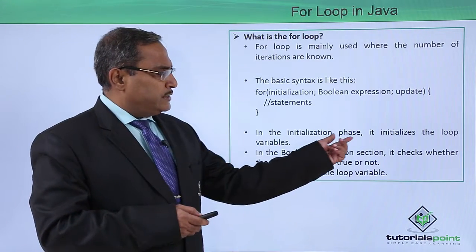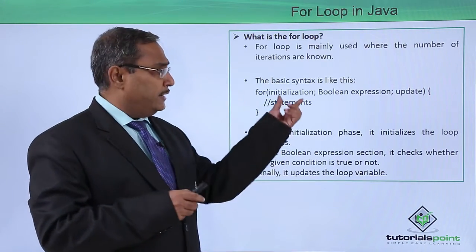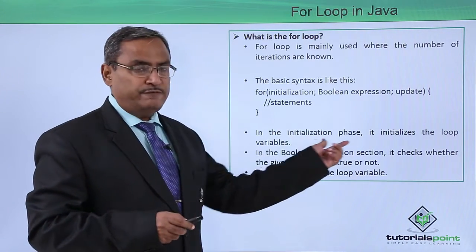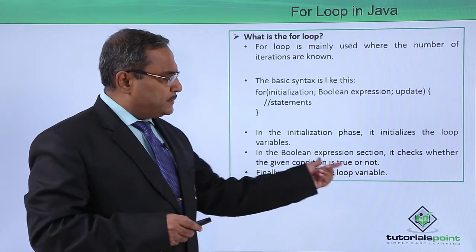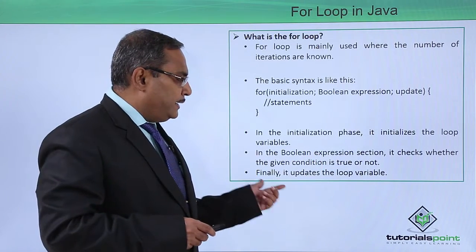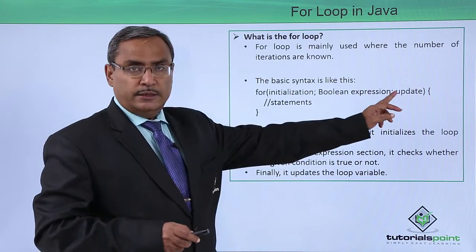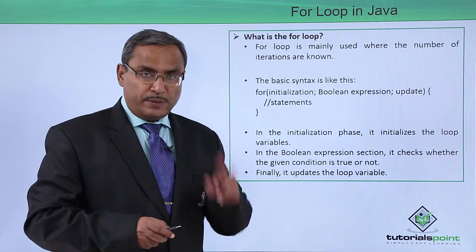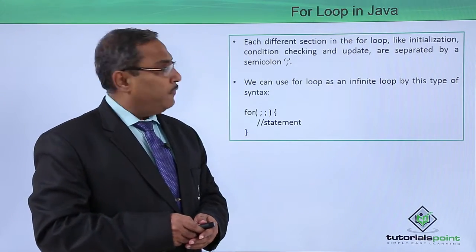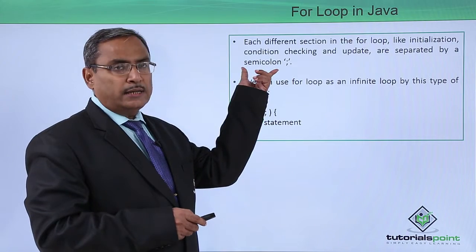In the initialization phase, it initializes the loop variable. Suppose i is the loop variable; we can write i equal to 1 or i equal to 10 — that is the loop initialization phase. In the boolean expression section, it checks whether the condition is true or false. Finally, it updates the loop control variable. These three sections — initialization, condition checking, and update — are separated by two semicolons.